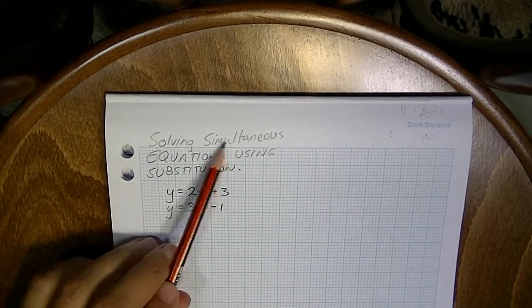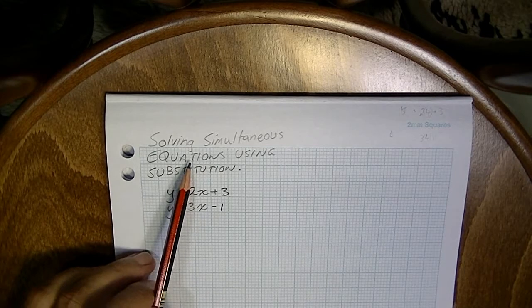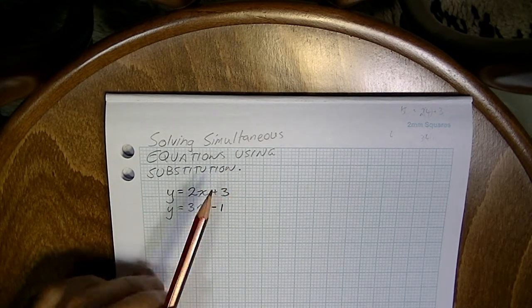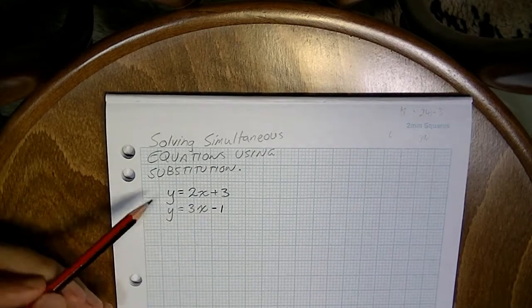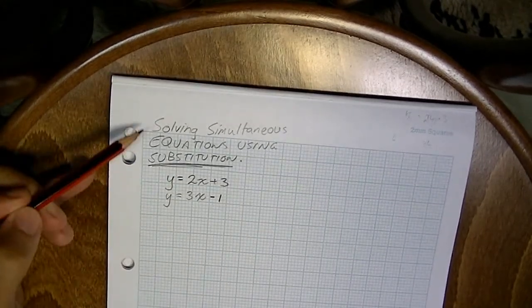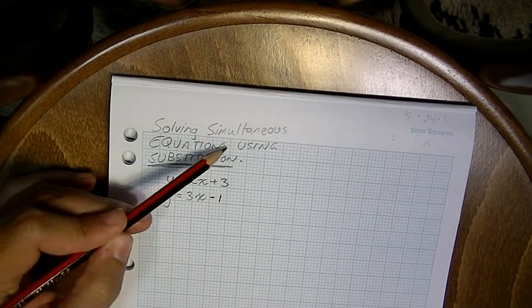Okay, so in this video we're solving simultaneous equations again, but this time we're going to use an algebraic method. There's two algebraic methods that you're going to learn. This is the first one. The algebraic method here is called substitution. So we're going to be solving simultaneous equations using substitution.